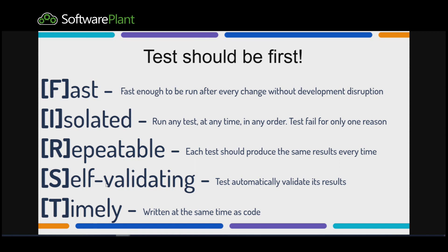Tests should be Isolated, and isolated means two things. I should be able to run a single test from any test suite in my code in isolation — I shouldn't be forced to run three ordered tests to be sure they work. The other thing is that a test should have only one reason to fail. If I can find two reasons for my test to fail, I should probably split my test case.